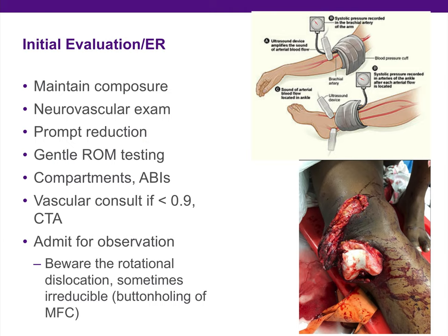You want to test their compartments as well as ABIs. If the ABI is less than 0.9, you're going to consider a CT angiogram as well as a vascular consultation, and then admit these patients for observation. Caution all residents to beware of the rotational dislocation. These are usually posterolateral rotatory dislocations, which sometimes cause the medial femoral condyle to buttonhole through the capsule, rendering it irreducible. These need to be taken to the operating room and typically open-reduced.